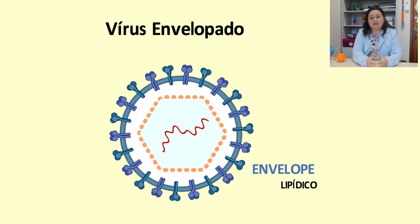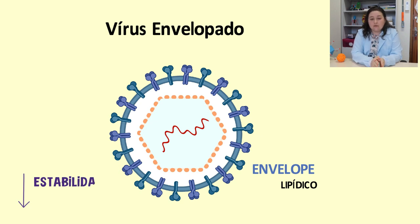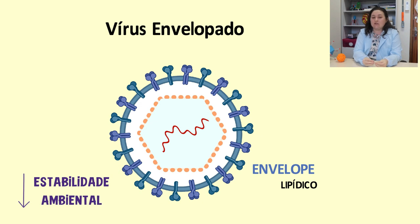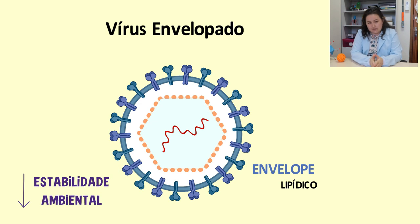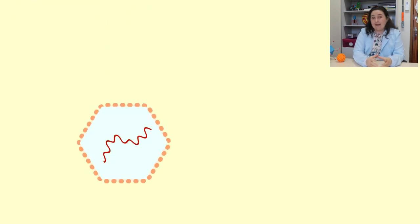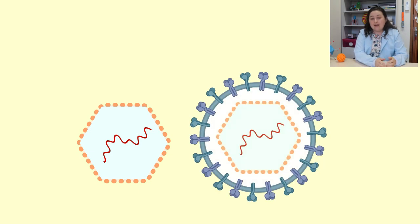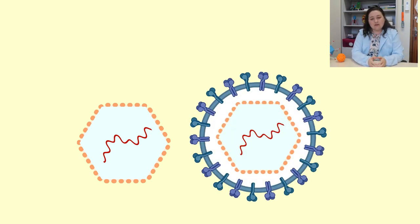O envelope faz com que os vírus se tornem menos estáveis no ambiente, pois a composição lipídica do envelope é mais facilmente destruída na presença de detergentes, radiação ultravioleta, calor e outros agentes. Então, o vírus que parece mais simples, que são os não envelopados, ele é mais estável nos ambientes. Aqui, o menos é mais.